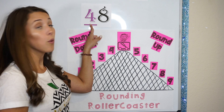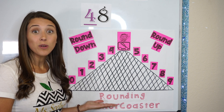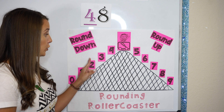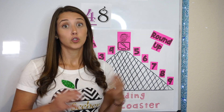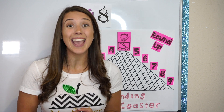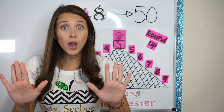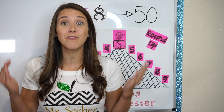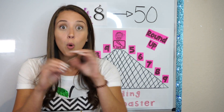We're looking at 48. When I look to the right of my number, I see the number is 8. This is my rounding roller coaster. Let's see where the number 8 lands: 0, 1, 2, 3, 4 — up — 5, 6, 7, 8. That means that I need to round up. Since we are rounding up because 8 is 5 or more, my number actually now becomes 50. We went up, so 4 became 5, and everything else after the place value that we are rounding becomes a 0, always.